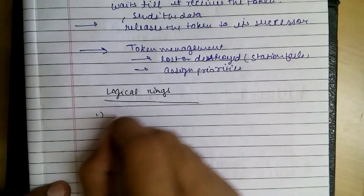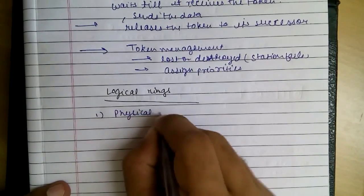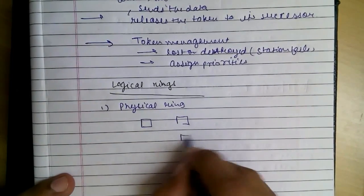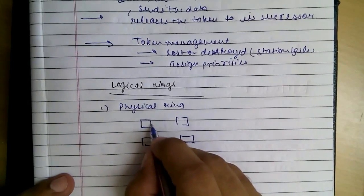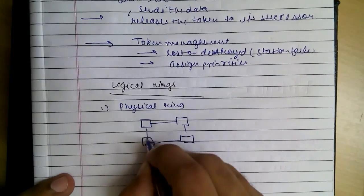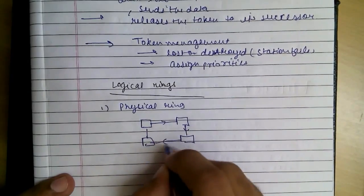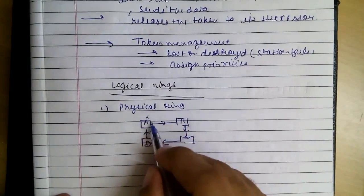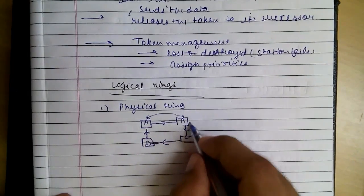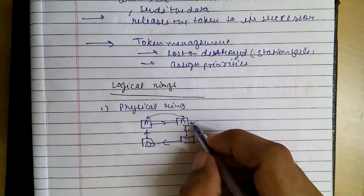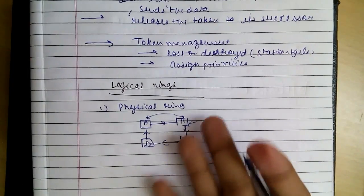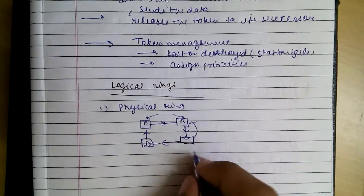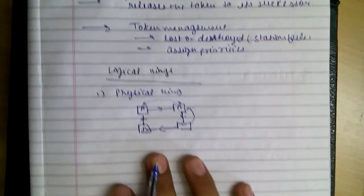The first one is a physical ring topology. Say stations A, B, C, D are connected in a circular manner. So A gets the token and sends it to B. If B wants to send something, it sends when it has the token; if it doesn't, it passes the token on. So the token keeps circulating in this manner.